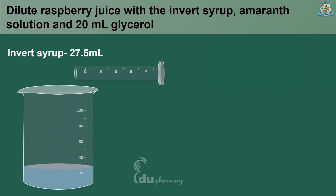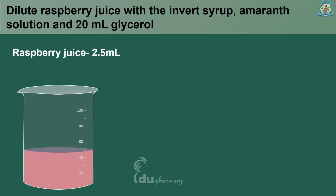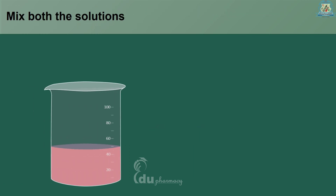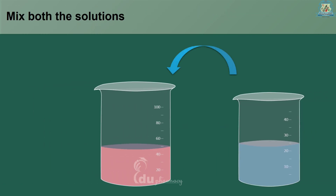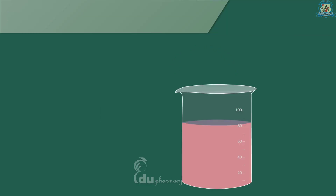Now, dilute raspberry juice with the invert syrup, amaranth solution and 20 ml glycerol in a separate beaker. In the next step, we need to mix both the mixtures and adjust the final volume to 100 ml with glycerol.